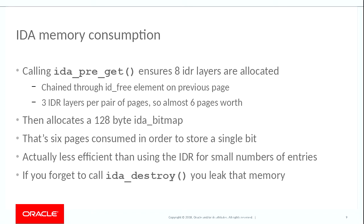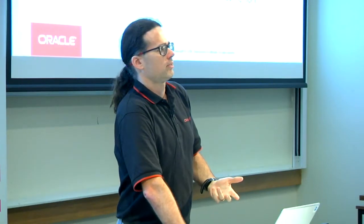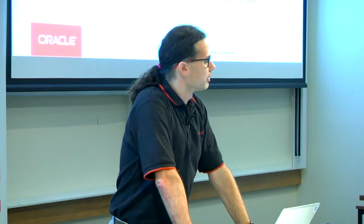Rather than waste almost half a page of memory, the allocator allocates a pair of pages and fits three from it, rather than allocating a page and getting one from it. Then the IDA code allocates a 128-byte IDA bitmap which will actually store the bits. So we start out by allocating six pages just to store a single bit. These pages are per-IDA — so if you have four widgets, each of them has six pages allocated just sitting there, waiting for you to need them, which you almost never end up needing.